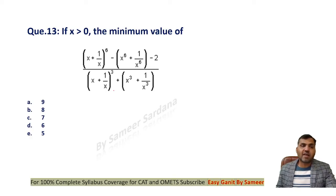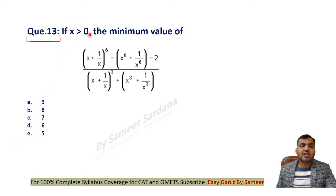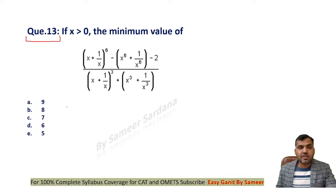In the previous two parts I covered questions till question number 12, so here is question number 13. X is given as greater than zero — that means x is a positive real number. Now you need to modify this expression. Look at the whole expression carefully and try to modify it. Look at the numerator value.